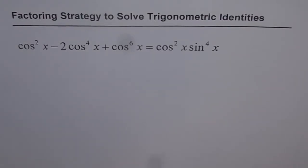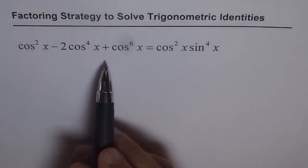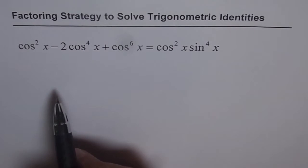Factoring strategy to solve trigonometric identities. This is a great technique to prove trigonometric identities, and here we have an excellent example: cos²x - 2cos⁴x + cos⁶x = cos²x sin⁴x.